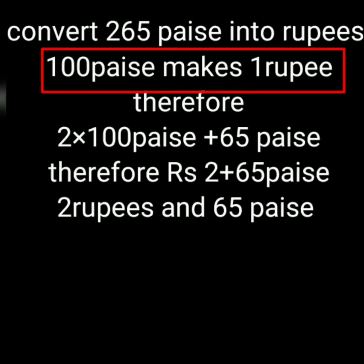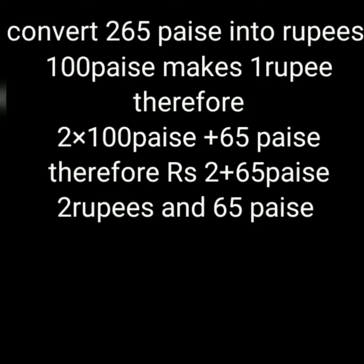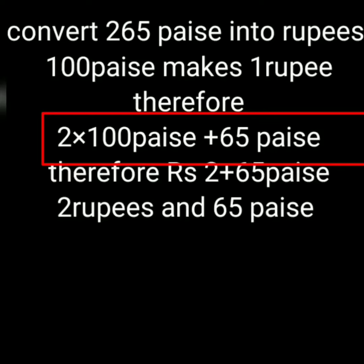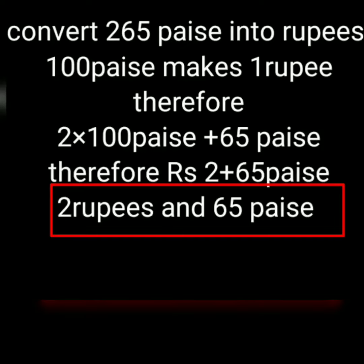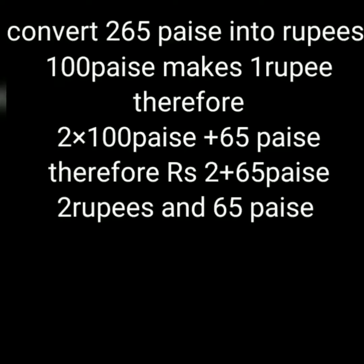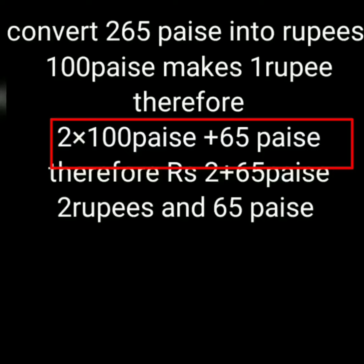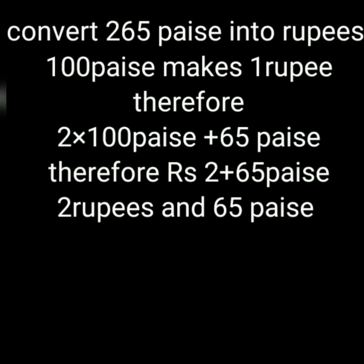We have to convert this paise to rupees. As we know that 100 paise makes 1 rupee. In this question there are 200 paise plus 65 paise. When you distribute like this you will understand that we have 2 rupees and 65 paise. Hence we have converted the paise to rupees, that is 2 rupees and 65 paise. So while converting paise to rupees you have to distribute the amount into hundreds and remaining paise.